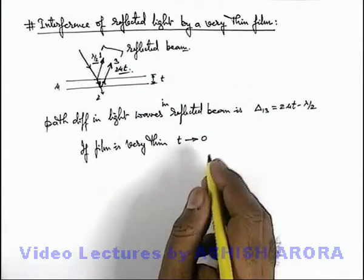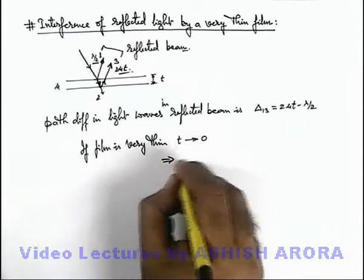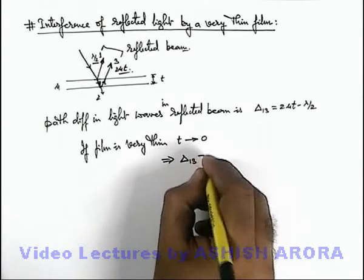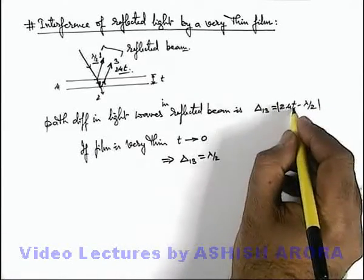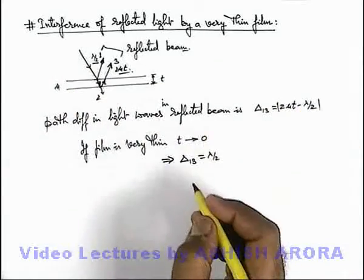If t is tending to zero, then this implies the path difference between the two beams will be lambda by 2. We can take the magnitude of this. If this is negligible, the path difference is only lambda by 2.